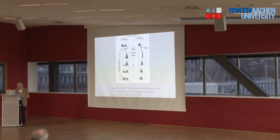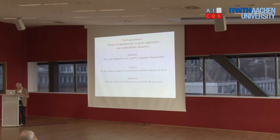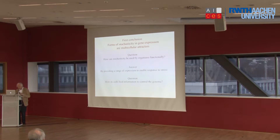Your immune system, when it encounters an invader it has not met before, will do this — it will select from an array of immune system cells to choose those best suited to deal with the invader. So my first conclusion is that forms of stochasticity in gene expression are cellular attractors, and there are various ways they can be used by organisms to generate function.